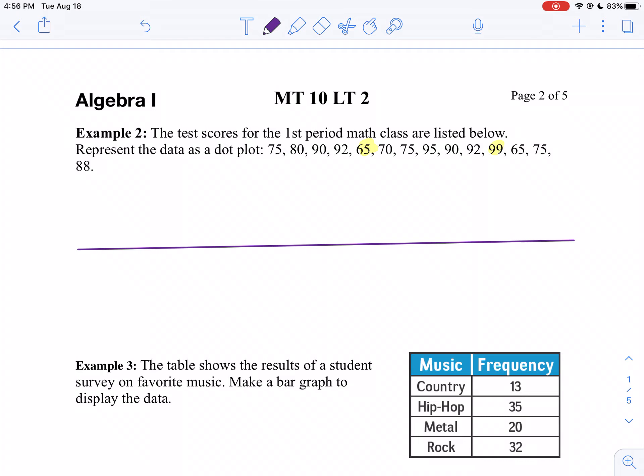So in other words, I'm going to go from 65 to 69. That will be the first five numbers. Then 70 to 74. And then 75 to 79.